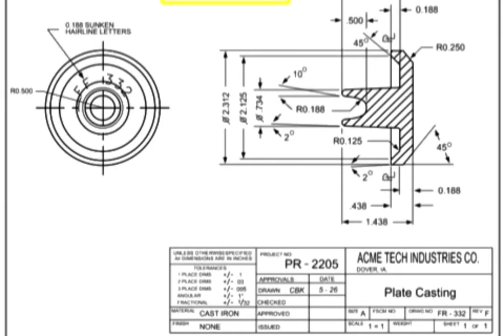A detail drawing is a drawing that contains all the information required for a specific part. There are many different ways a part can come into existence, including casting, machining, welding, purchasing a part, or even modifying an existing part.